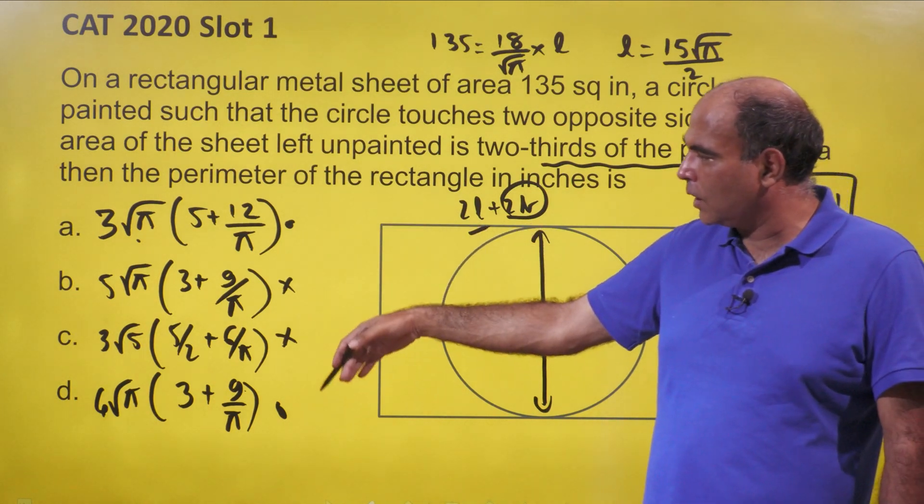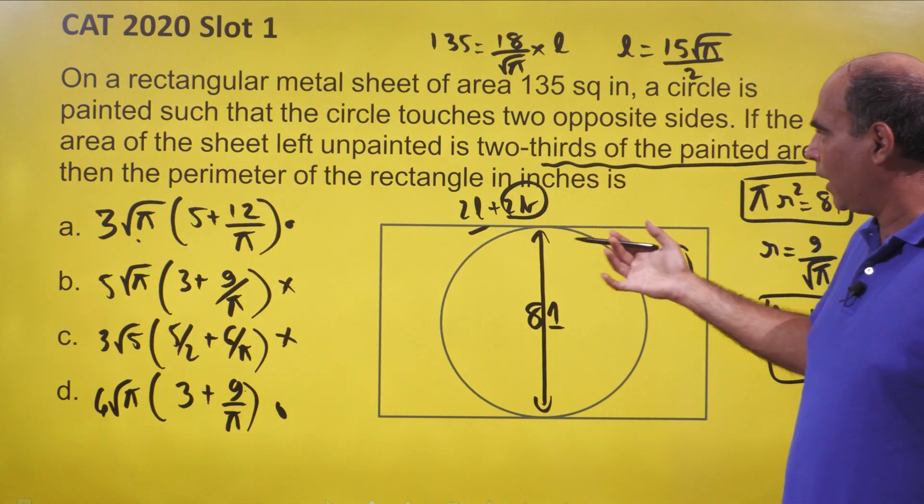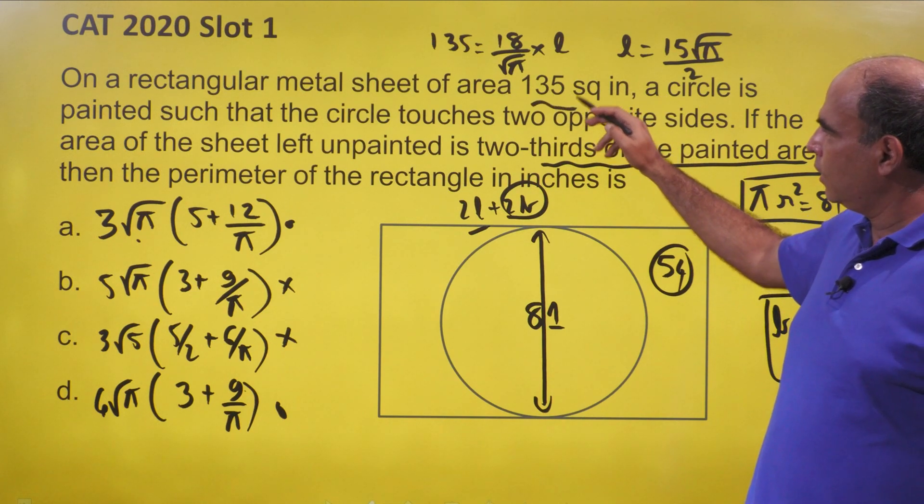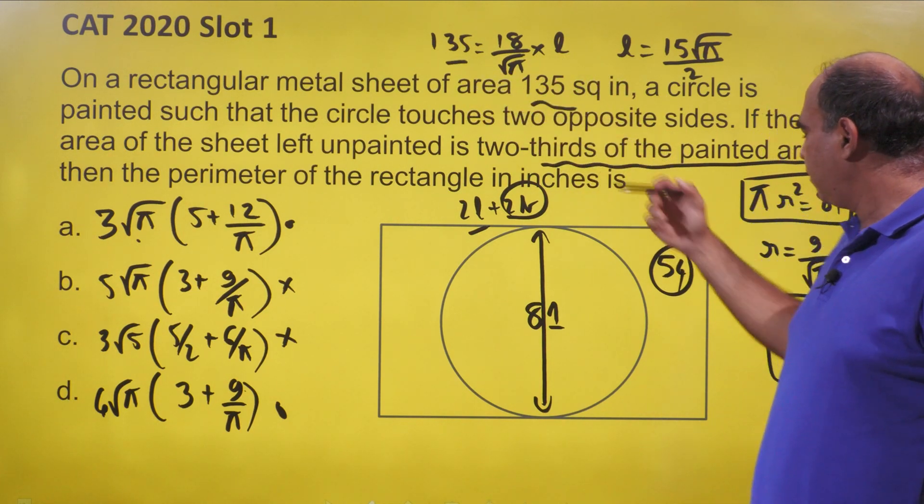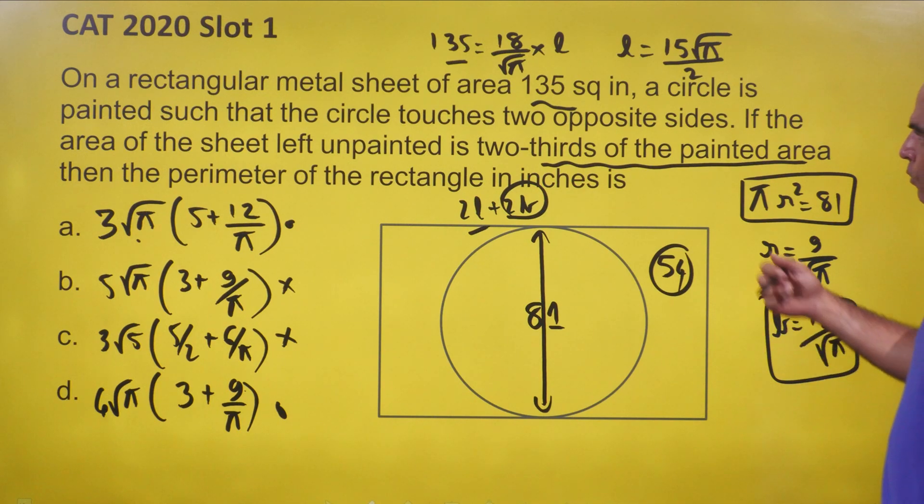So once I have that, I still need to find 2l because there are two options left. So to find l, I use the area logic. Length into breadth is equal to 135. Breadth I know as 18 by root π.